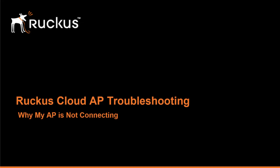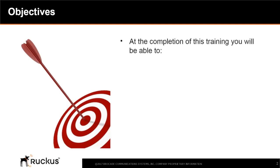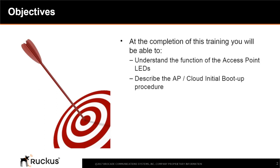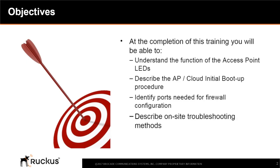This is a troubleshooting guide for users having problems connecting their Ruckus access points to the Ruckus Cloud portal. At the completion of this training, you will be able to understand the functions of the access point LEDs, describe the access point and cloud initial boot-up procedure, identify ports needed for firewall configuration, describe on-site troubleshooting methods, and know where to obtain Ruckus Cloud support information.